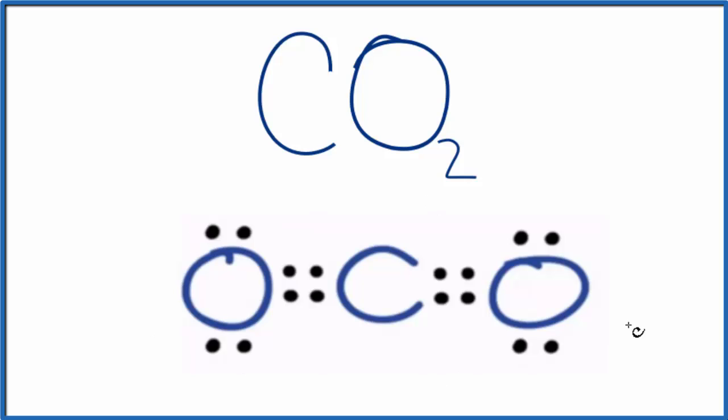We have our Lewis structure, and we can see that oxygen has eight valence electrons. It has an octet. Same over here. Those are symmetrical. And the carbon in the middle has eight valence electrons as well. These double bonds allow us to complete the octets for each of the atoms. If you calculate the formal charges, this is the best or most likely Lewis structure for carbon dioxide.